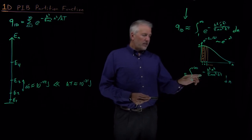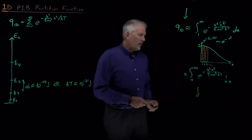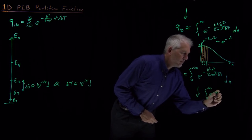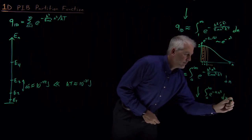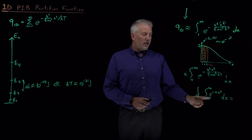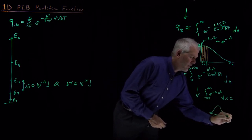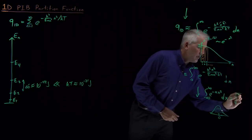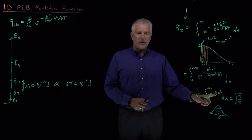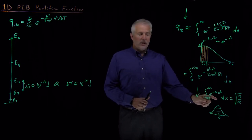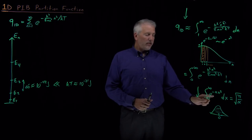What we're left with is a Gaussian integral. We're going to encounter a lot of these Gaussian integrals. The easiest one to remember is: the integral from negative infinity to positive infinity of e to the minus alpha times x squared equals the square root of pi over alpha, where alpha is the constant in the exponent. That's something you can get from an integral table or look up online. We'll have a separate video on computing Gaussian integrals since they show up so often.